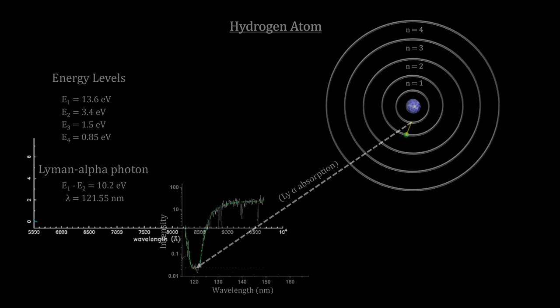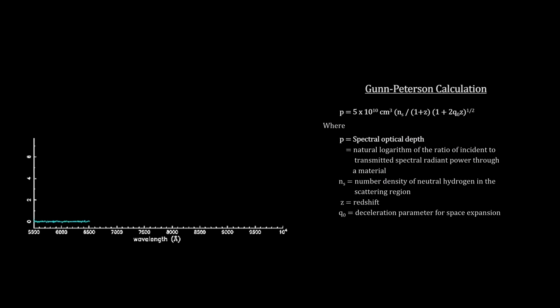Gunn and Peterson reasoned that as light bluer than Lyman alpha is stretched with the expansion of the space it is passing through, it will reach the Lyman alpha wavelength and also be absorbed by hydrogen. They calculated that even as few as one atom for every 100,000 ionized would have enough of an effect to create a trough in the light's spectra.